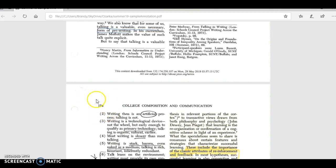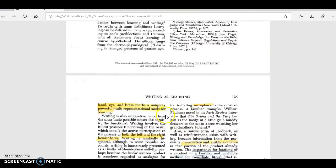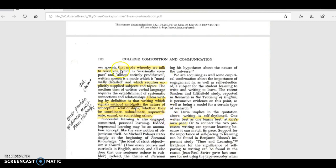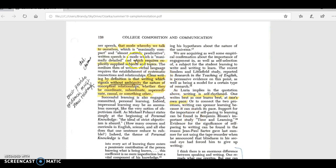And always use the PDF page number. So I've selected an entry from page 126. This is an original annotation - this is what I did when I read it the first time. I highlighted here: 'clear writing by definition is that writing which signals without ambiguity the nature of conceptual relationships, whether'